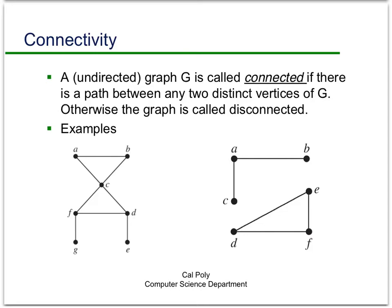Connectivity is a very important concept in graph theory, and luckily it's pretty easy to understand. It basically just says a graph is connected if there's a path between any two distinct vertices in G.